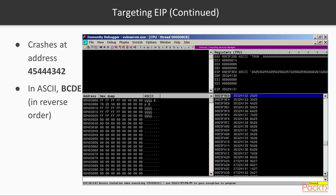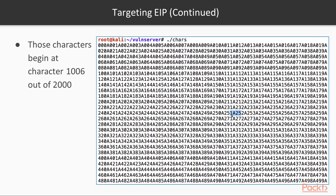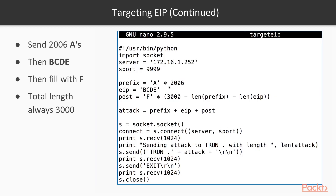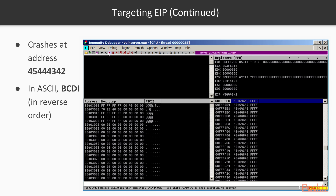When you send that to the server, it crashes on an execute instruction, trying to execute address 0x35324131. Reading those bytes back into ASCII in reverse order gives 1A25 — the pattern at character 1006 in the 2000-byte sequence. That makes it possible to more precisely target the EIP by putting 2006 capital A's, then the 4 bytes to hit the EIP, and then enough bytes afterward to keep the total length of the attack at 3000. If the total length doesn't stay 3000, we won't be targeting the same crash. Those four chosen characters end up in the instruction pointer as 0x42, 0x43, 0x44, 0x45, which is BCDE — confirming control of the instruction pointer.